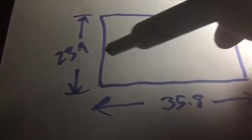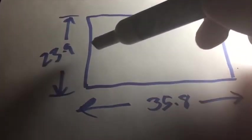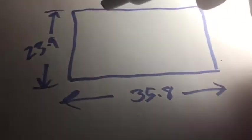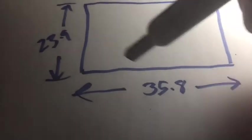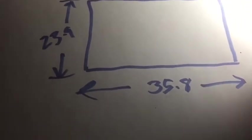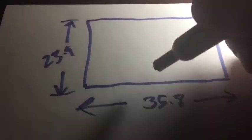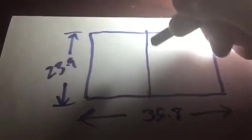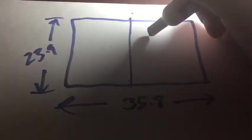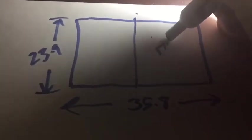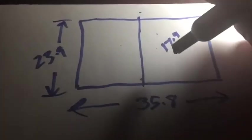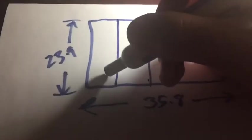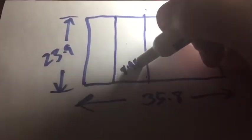So check this out. 23.9 millimeters by 35.8 millimeters — this is the chip size of my Canon 6D. You can find this measurement in the manual of your camera. Let's take 35.8 and split it in half. Each one of these sections is 17.9. Let's cut that in half again. Each one of these sections is 8.95 millimeters.